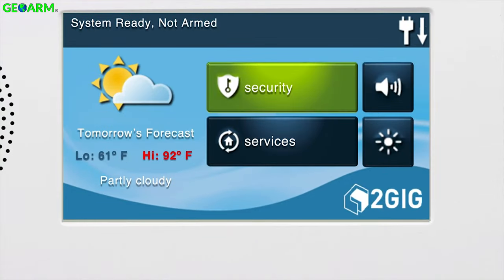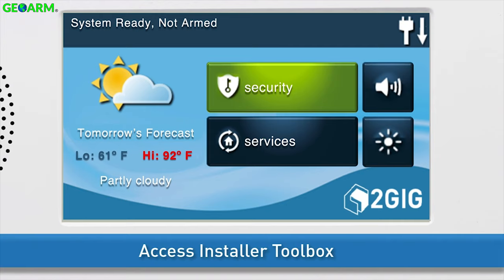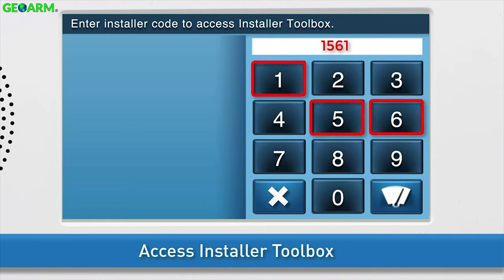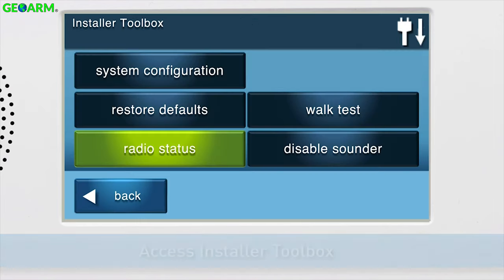To program a carbon monoxide detector into a security zone, you will first need to access the Installer Toolbox. Press the 2GIG logo on your GC2 panel screen. Enter the installer code. The default installer code for the GC2 is 1561. You are now in the Installer Toolbox.